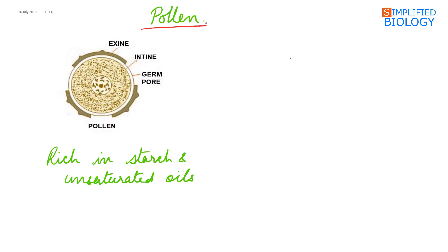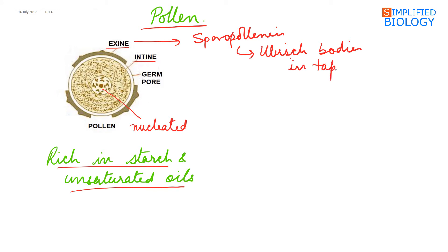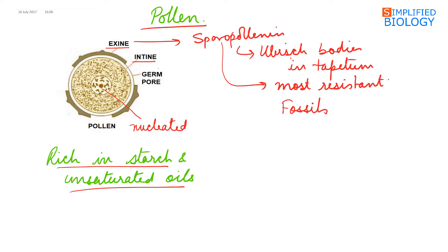A pollen is a unicellular, uninucleated structure having a two-layered wall: outer thick exine and inner thin intine. It has cytoplasm that is rich in starch and unsaturated oils. Exine is made up of sporopollenin, which is secreted by Ubisch bodies present in the tapetum. Sporopollenin is the most resistant material found on earth, as it can withstand enzymes, strong acid, alkali, and even high temperature — that is why pollens are usually found as fossils. Intine is made up of pectocellulose.